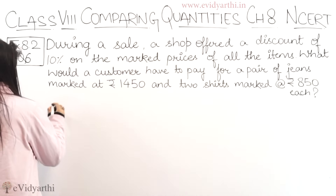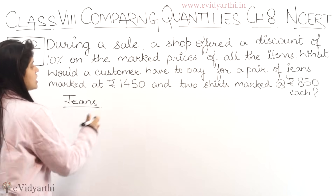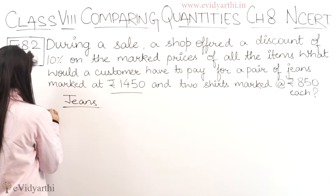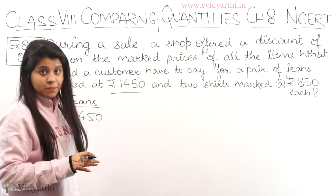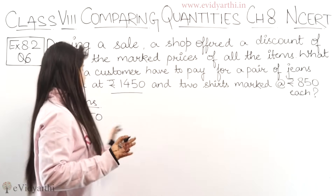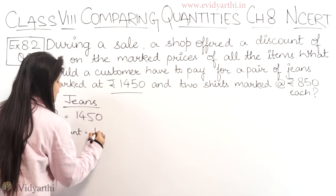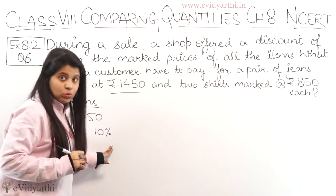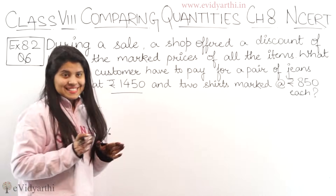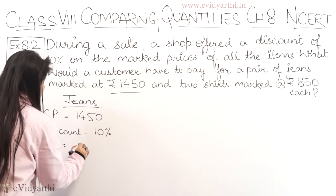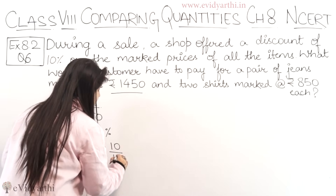Let's find it one by one, starting with the pair of jeans. The original price is 1450. So this means the cost price is 1450 minus 10%. The discount of 10% is always applied on the original price.